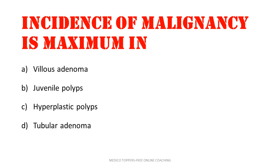Incidence of malignancy is maximum in: villous adenoma, juvenile polyps, hyperplastic polyps, or tubular adenoma. The answer is villous adenoma — incidence of malignancy is highest in villous adenoma.